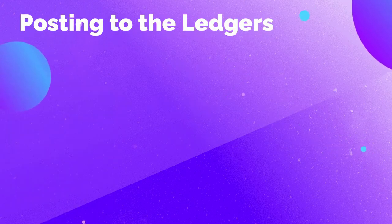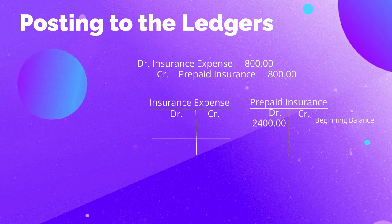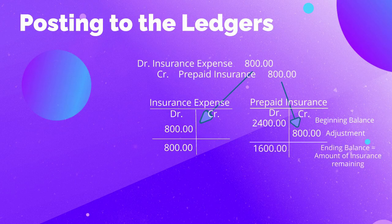We will follow the same steps to post the insurance adjustment. The debit to insurance expense will be posted to the left side of the insurance expense T-chart, and the credit to prepaid insurance will be posted to the right-hand side of the prepaid insurance T-chart. Remember, to get your balance, you will take the difference between your debits and credits. Look at prepaid insurance: the beginning balance of $2,400 minus the adjustment of $800 will leave a debit balance of $1,600.